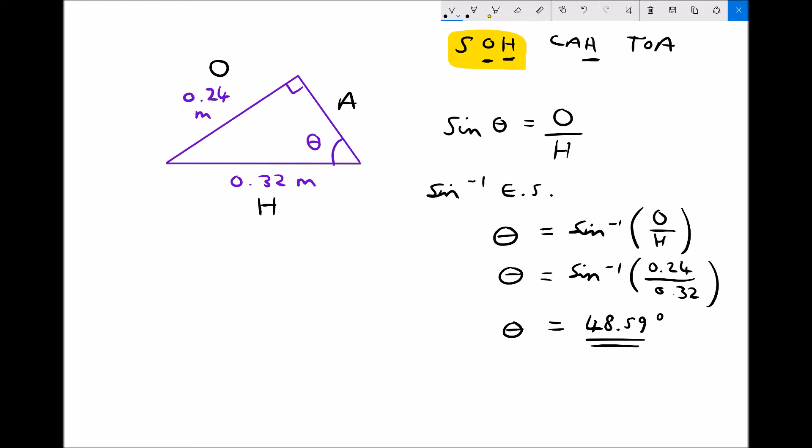So we've just said there that the inverse of sine is sine to the minus 1. Well, the inverse of cos is cos to the minus 1, and the inverse of tan is tan to the minus 1.